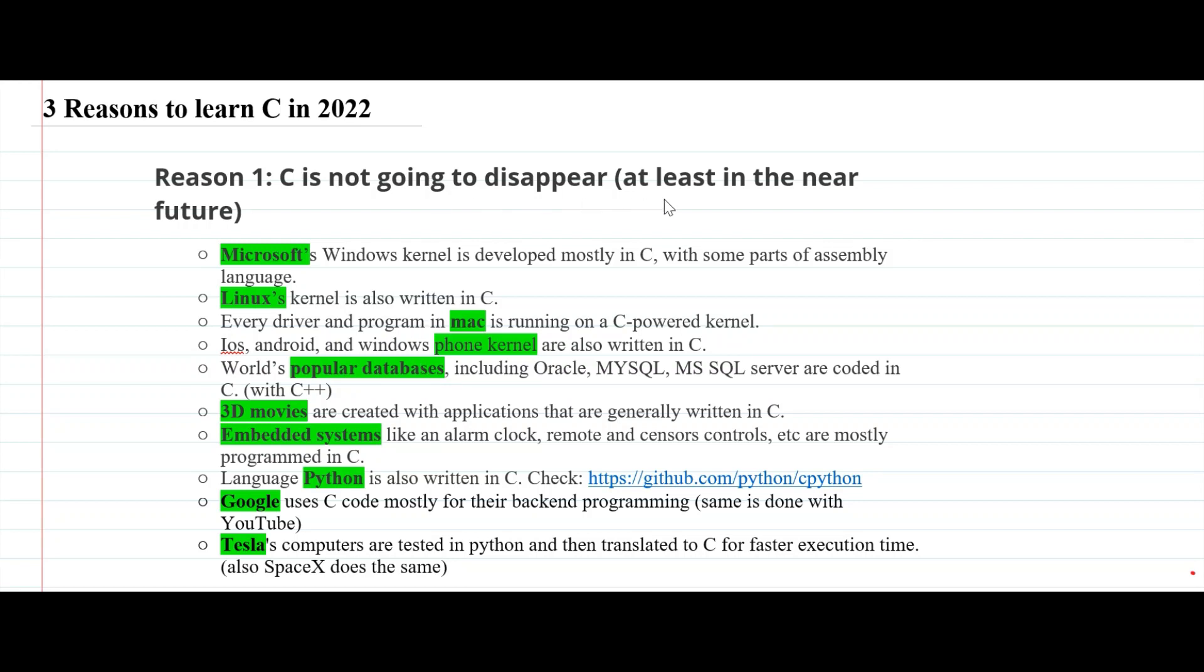My first reason is C is not going to disappear, at least in the near future. C is widely used in devices which we use in our daily life.